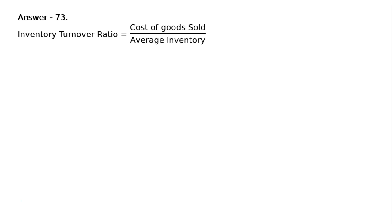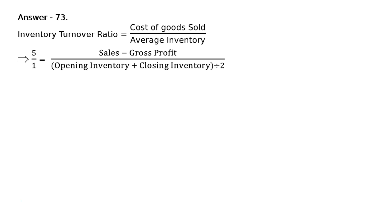This is question 73. From the following information, determine opening and closing inventories. The information is given. The inventory turnover ratio is equal to cost of goods sold upon average inventory, that is 5 upon 1.